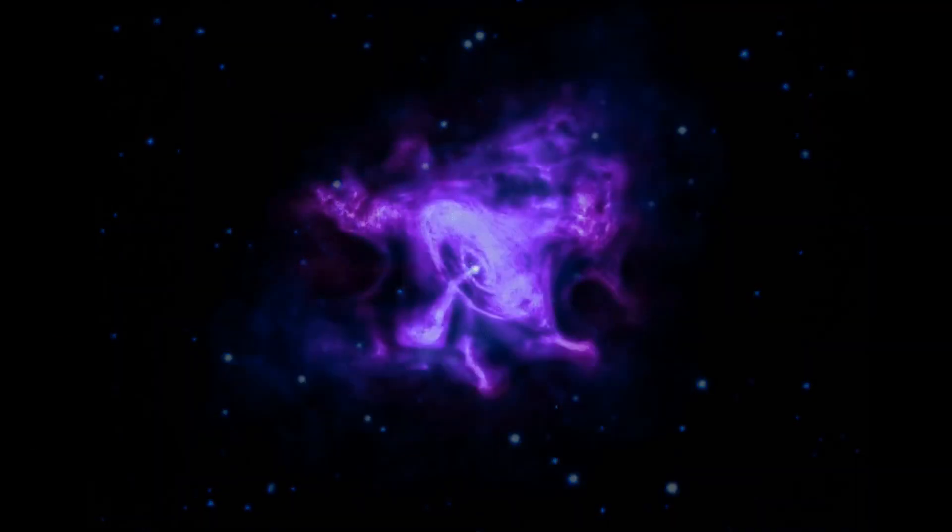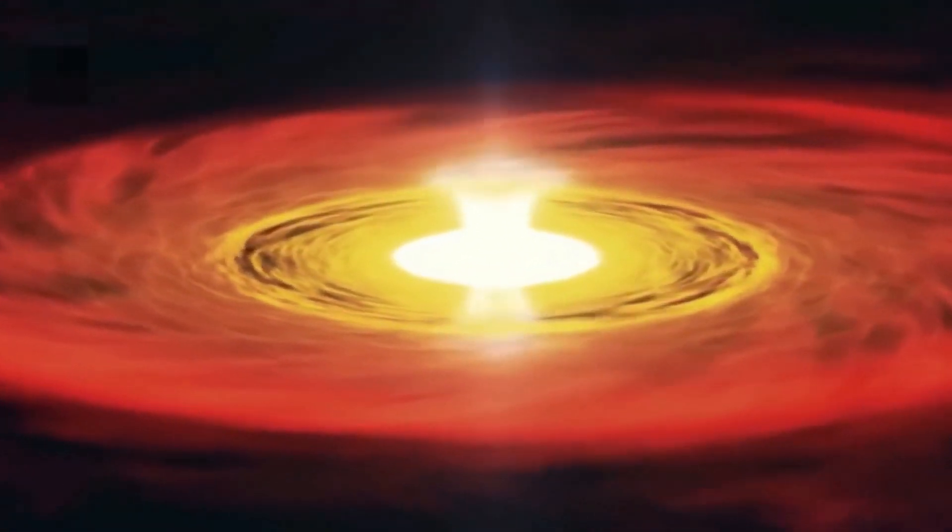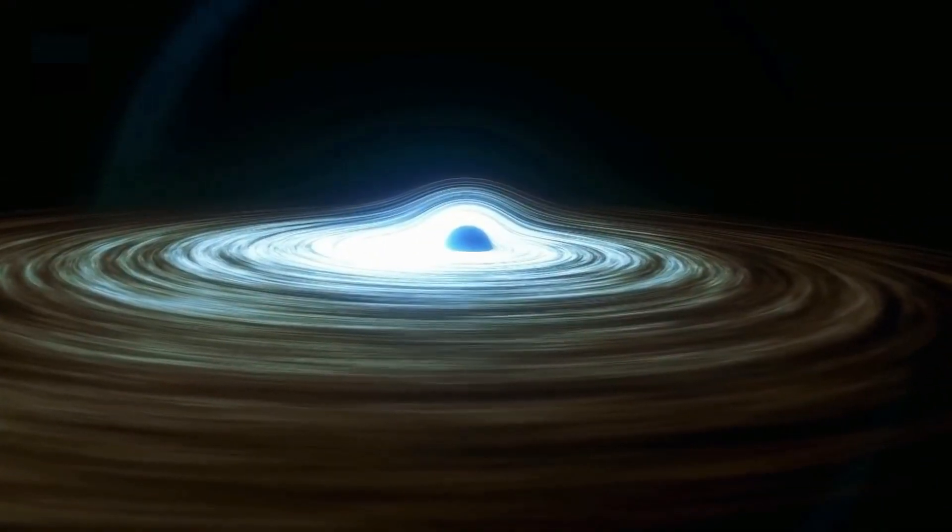Scientists at Ohio State University said that if a star can forgo the supernova and still make a black hole, it would help explain why we don't see supernovae from the most massive stars.